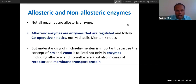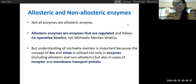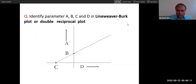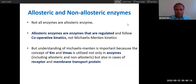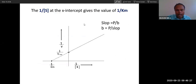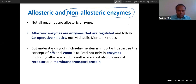Enzyme is the core of biochemistry — if you understand enzyme, you understand biochemistry. There are two types of enzymes: non-allosteric enzymes and allosteric enzymes. Non-allosteric enzymes follow the Michaelis-Menten hyperbolic curve. Allosteric enzymes follow a different type of curve — a sigmoid-shaped curve.